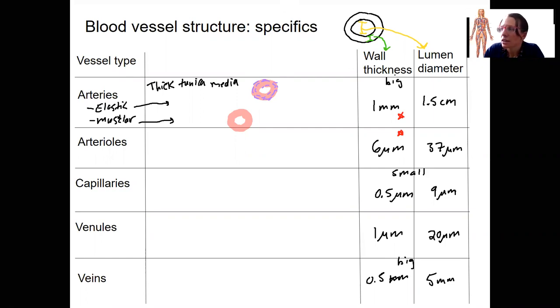Pretty decent size. Tunica externa, that fibrous layer. You remember from the cow heart, these things had some integrity to them. And thin endothelium, just like all vessels. So pretty much the endothelium is not going to vary because it's simple squamous. It's always simple squamous.